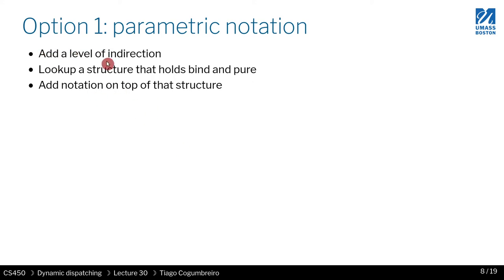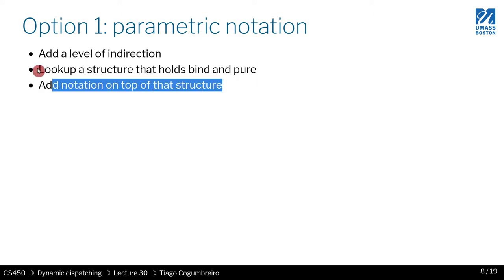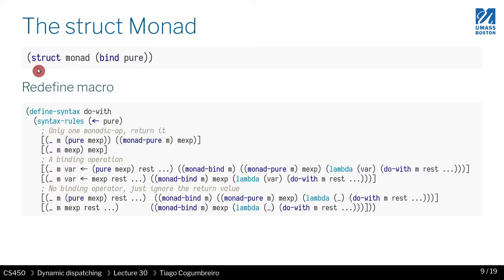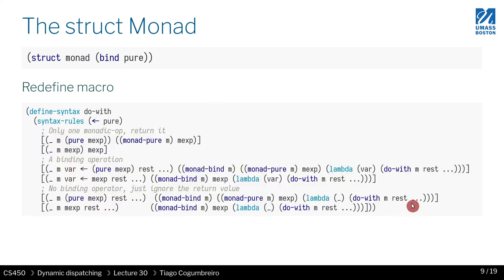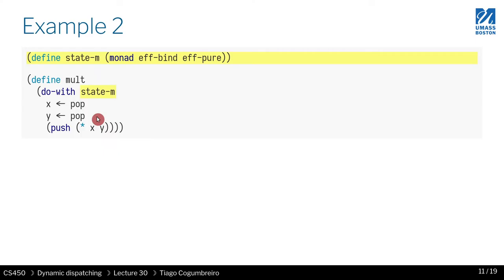In summary, I added the level of indirection. Now whenever my macro calls bind or pure, it has to look up this data structure to figure out the implementation of bind and pure. We have the very nice macro on top of it that hides away the ugliness. Here is the struct and the macro — you're not expected to understand exactly what it's doing; it's more to show you it is possible. And here are the examples: the list monad and the state monad.